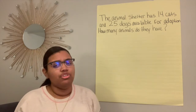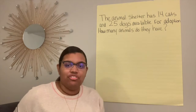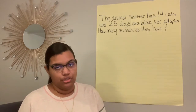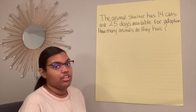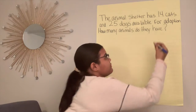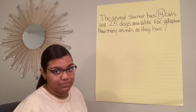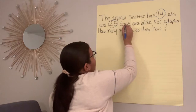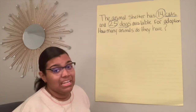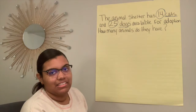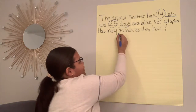Okay, scholars. You know what time it is — we have to mark up that text. We're going to go through this text and mark it up for the important information that's going to help us figure out our number sentence and then figure out the unknown. The animal shelter had 14 cats. What is important here? Good — the 14. So we're actually going to circle this 14. And 25 dogs — what's important here? The 25 dogs. So underline dogs and underline cats. They're available for adoption. How many animals do they have?